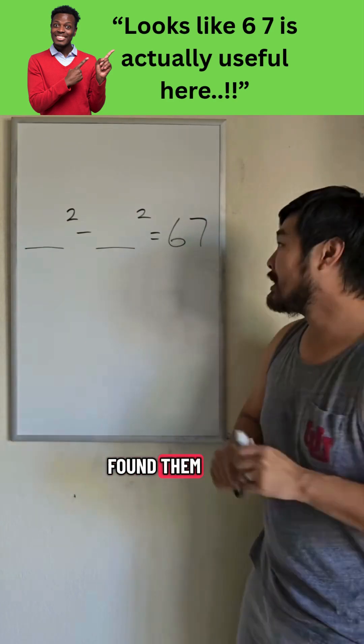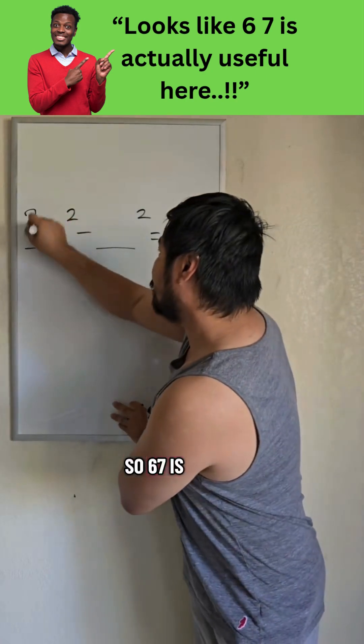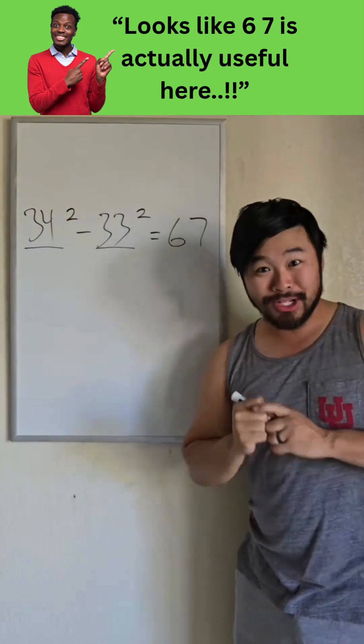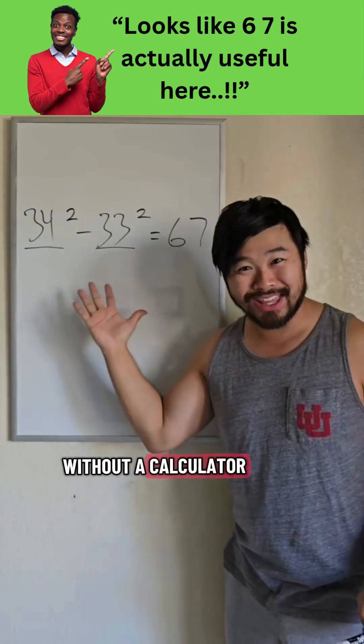So we found them. So 67 is 34 squared minus 33 squared. Pretty cool, right? We did this without a calculator.